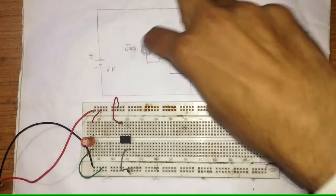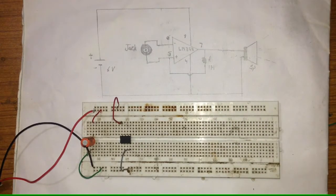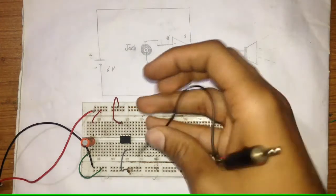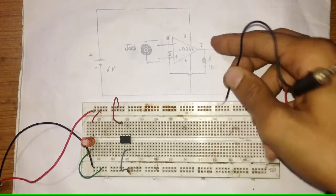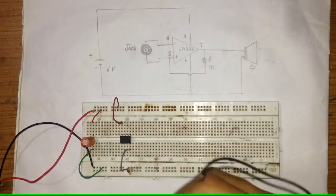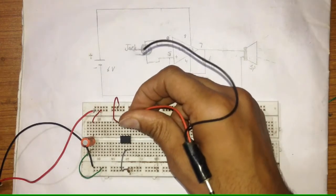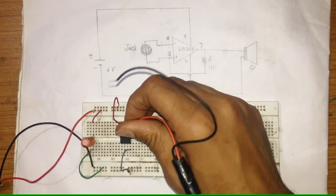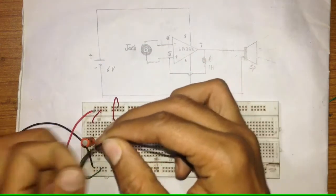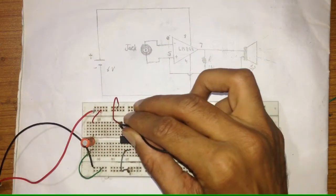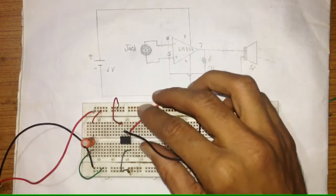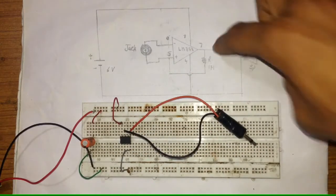Now connect this jack here. The jack will be at pins 5 and 6. Here it is. Pin 5 will be positive non-inverting. Pins 5 and 6, okay connected. Now the speaker.